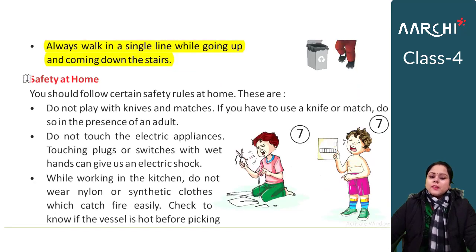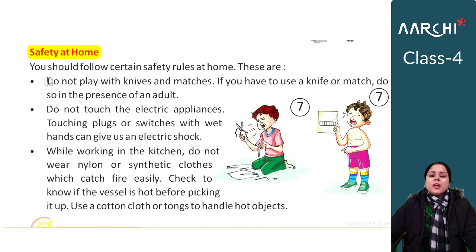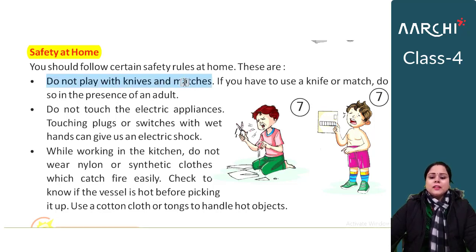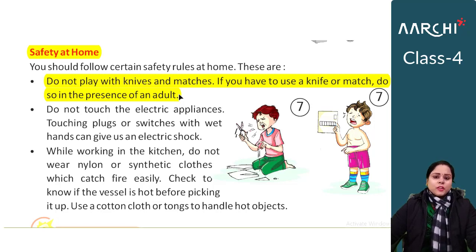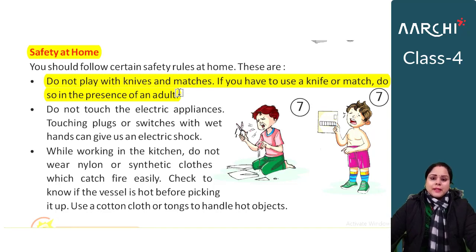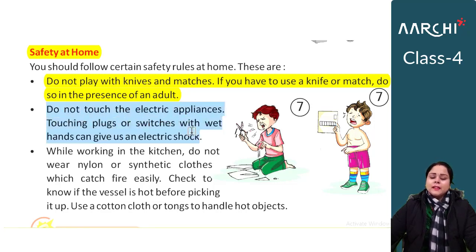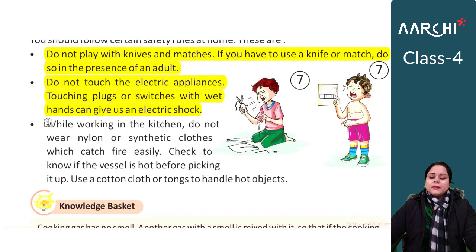You should follow safety rules at home. Sometimes sharp objects like knives, sticks, or scissors — you should not play with them, because using a sharp object can hurt your finger or cause bleeding. If you need to use a sharp object, always do so under adult supervision. Don't leave any electrical appliance on or switch it on or off with wet hands, because you can get an electric shock. When you work in the kitchen, always wear cotton clothes, because nylon or synthetic clothes can catch fire quickly.